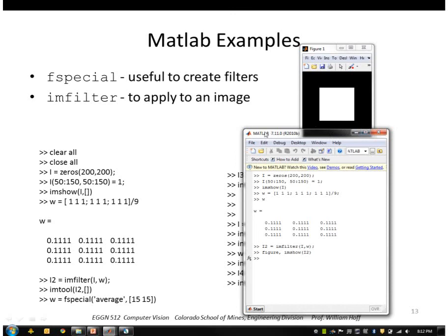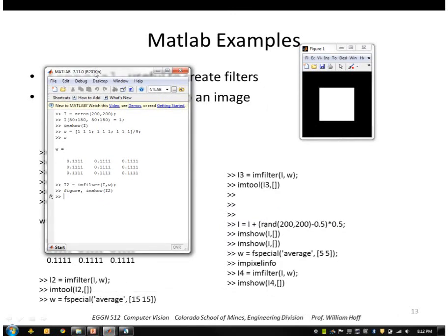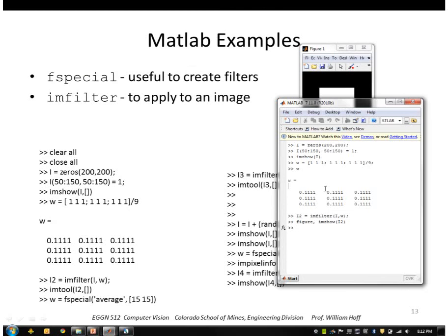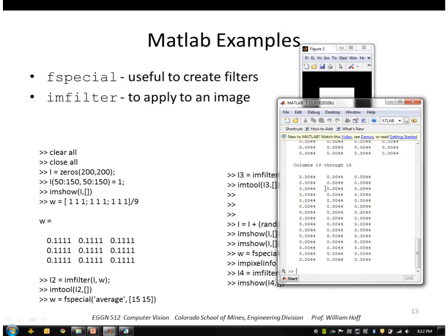I can also do larger masks. I'll use this MATLAB function called fspecial. So fspecial is a convenience function that can create lots of different types of masks. I'll use the average filter. So this creates a 15 by 15 filter of ones. And I'll apply that to my image. And you can see that the blurring is much more pronounced now.